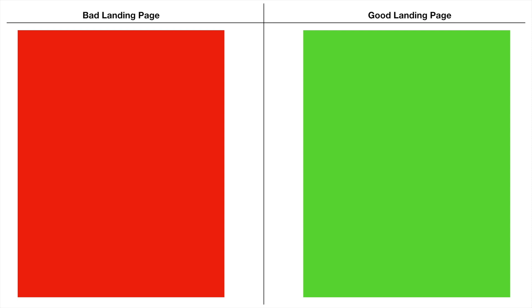So let's talk about the bad landing page, starting from the top — the headline. Here's an example headline for a weight loss product. This is a bad example; it's not going to get approved because you're guaranteeing something and Google hates that. Google hates it when you talk about numbers or guarantee something like 'this is going to help you lose 20 pounds in the next 20 days' or 'guaranteed weight loss method is about to change your life.'